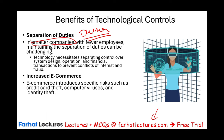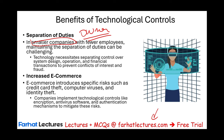The benefit of technological controls also includes increasing e-commerce. When you have good technology controls, you are going to sell more online. Selling online introduces risks such as credit card theft, computer viruses, and identity theft. So you need technological controls to make sure your database and payment system are protected. Companies implement controls like encryption, antivirus software, and authentication mechanisms to mitigate those risks.